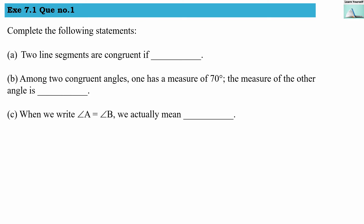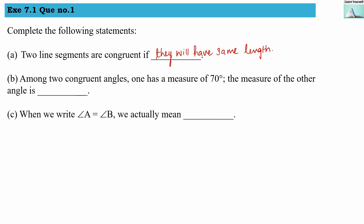Welcome to Learn Yourself. Exercise 7.1, question number 1: complete the following statements. Part A — two line segments are congruent if... Now if there are two line segments, for example AB and CD, they will be congruent if their lengths are the same. If both line segments are of the same length, then they are said to be congruent.